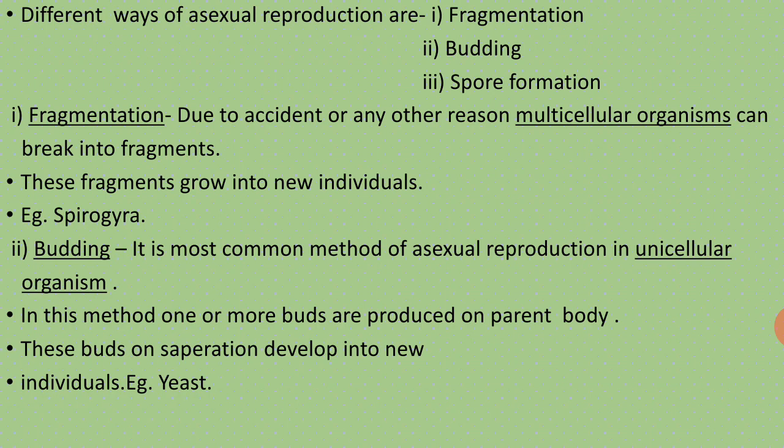Now, the different ways of asexual reproduction in lower organisms. They are fragmentation, budding, and spore formation. The first one is fragmentation. Due to an accident or any other reason, multicellular organisms can break into fragments and these fragments grow into new individuals. This method of reproduction is called fragmentation. An example is Spirogyra.